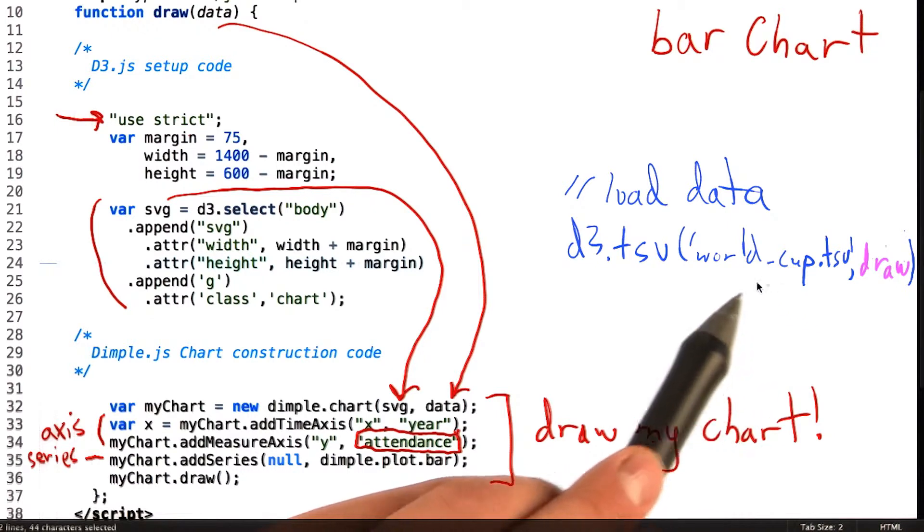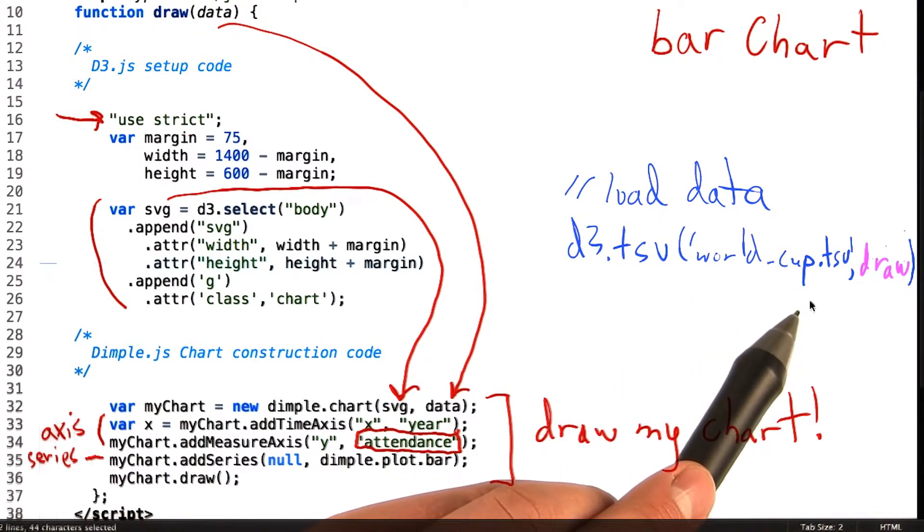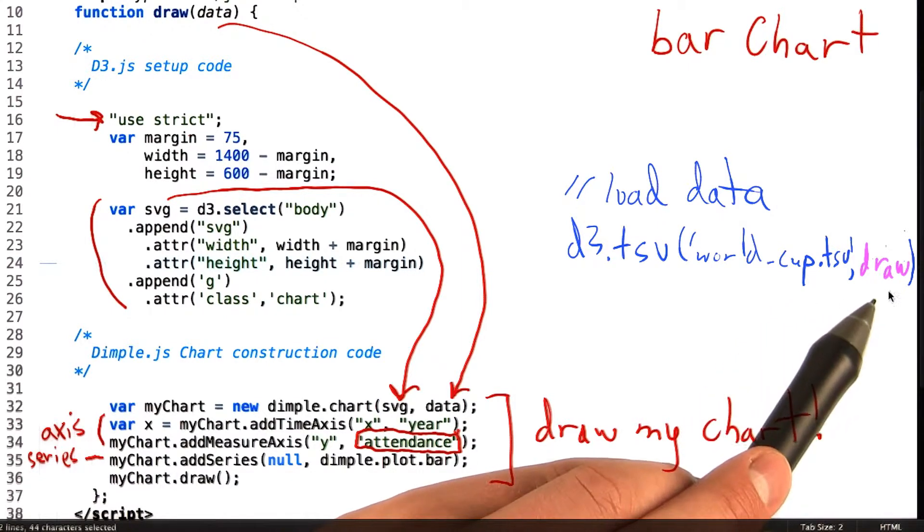In this case, worldcup.tsv. Once it's loaded via Ajax, it passes that data content to the draw callback.